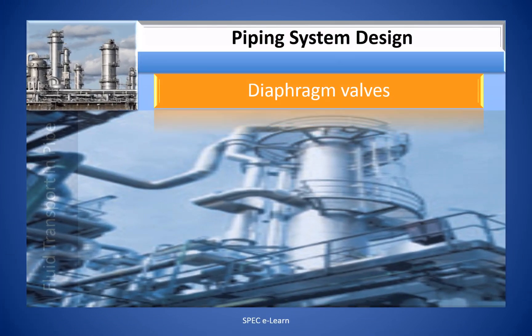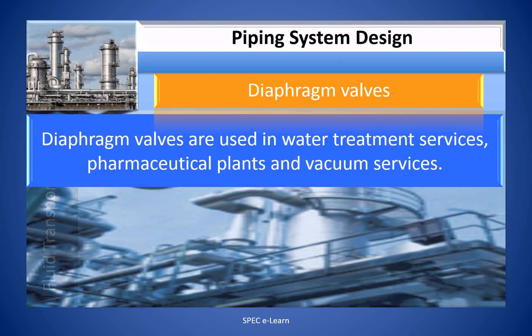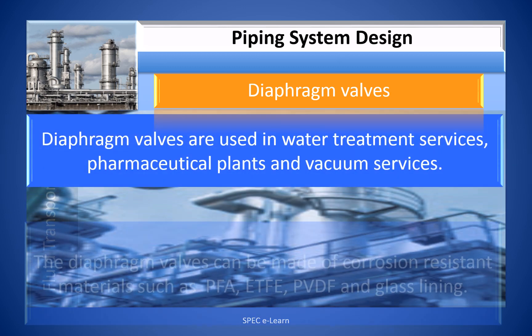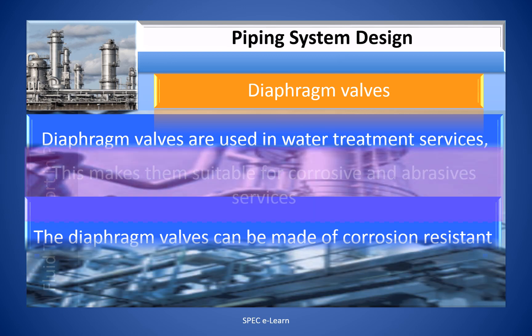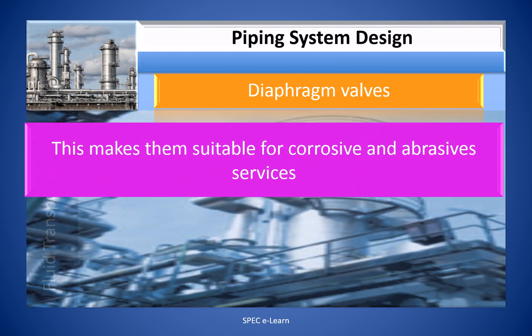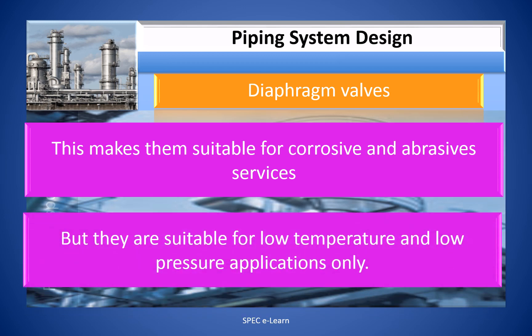Diaphragm valves are used in water treatment services, pharmaceutical plants, and vacuum services. They can be made of corrosion-resistant materials such as PFA, ETFE, PVDF, and glass lining, making them suitable for corrosive and abrasive services. However, they are suitable for low temperature and low pressure applications only.